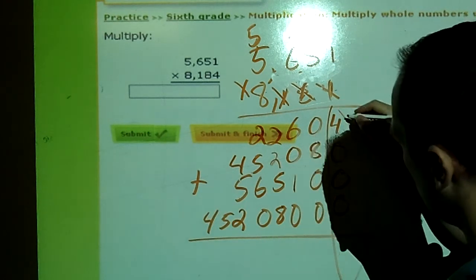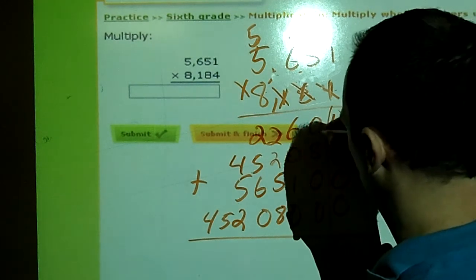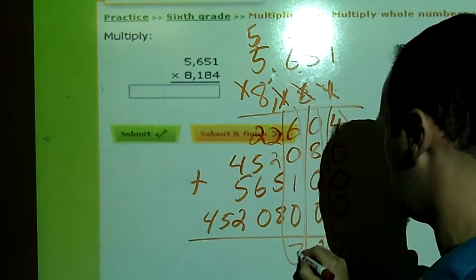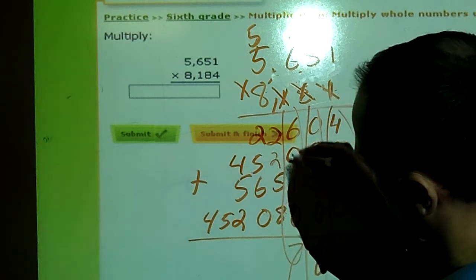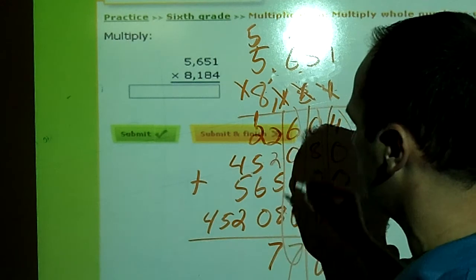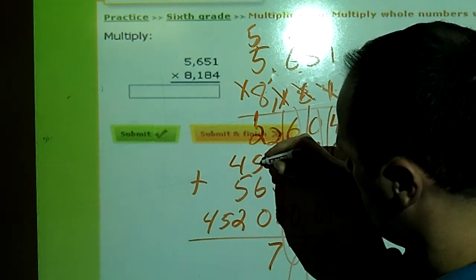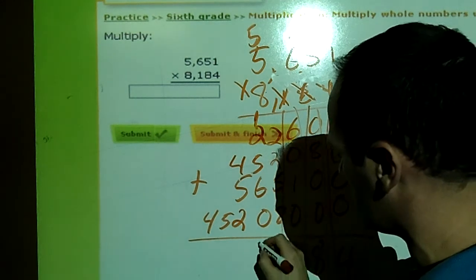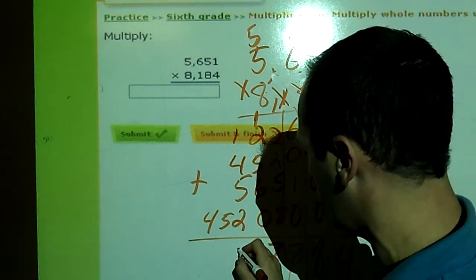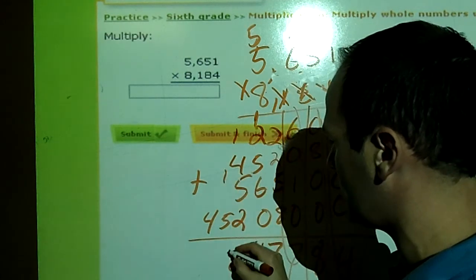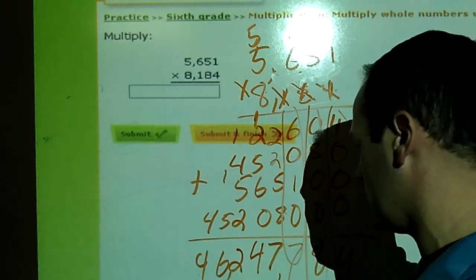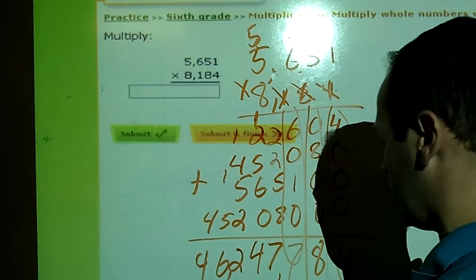So let's do it in columns. Four plus zero, zero, zero, zero, zero, zero is four. Zero plus eight, zero, zero, zero, zero, zero is eight. Six plus one is seven. Two plus two plus five plus eight is two plus two is four plus five is nine, nine plus eight is seventeen, carry my one. One plus two is three plus five is eight, eight plus six is 14 plus 0 is 14. Carry my 1. 1 plus 4 is 5. 5 plus 5 is 10. 10 plus 2 is 12. Carry my 2. Put my 1 here. 5 plus 1 is 6. 4 plus nothing is 4. And here's my big number. Let's put some commas in here. 46,247,784.